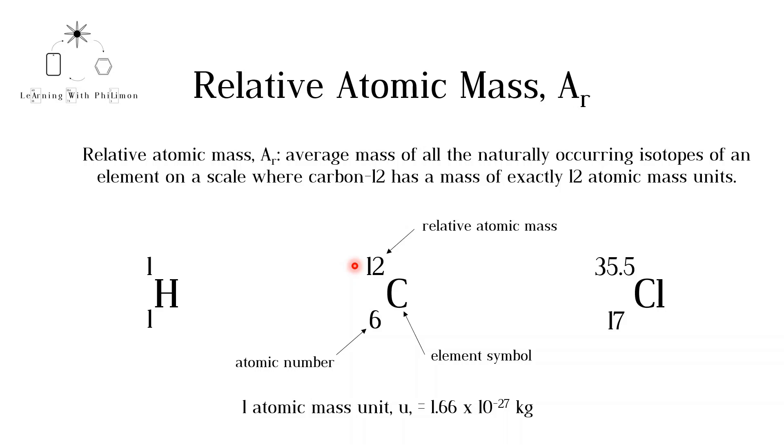Remember that different isotopes of the same element have different masses. This is why an average is calculated. For more on this, check out the isotopes video. One atomic mass unit, U, is equal to approximately 1.66 times 10 to the minus 27 kilograms.